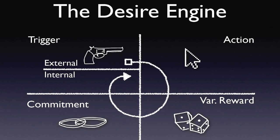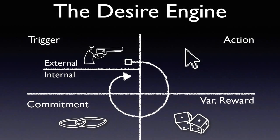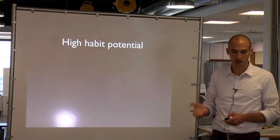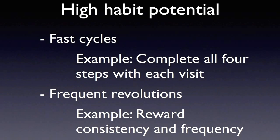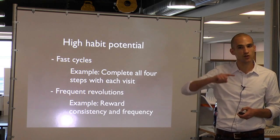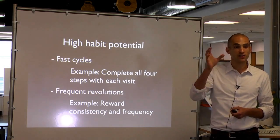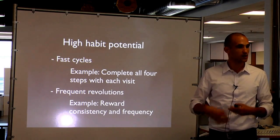You can manufacture desire and move users from pleasure-seeking behaviors to pain-alleviating behaviors with what I call the Desire Engine. It's a four-step process that emerged from the pattern I saw time and again from habit-forming technology companies. They run us through four basic steps: trigger, action, variable reward, and commitment. Can anything be turned into a habit? A lot of things can, but there's a spectrum. The two criteria for high habit potential are fast cycle time and frequent revolutions — the quicker you take a user through the four steps, and the more loops in a short period of time, the stickier the habit.